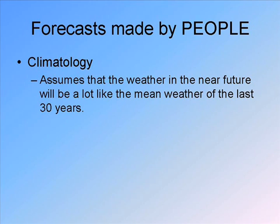One way to make a forecast of what the weather is going to be like on April 17th is to just look back and see what the mean temperatures were on April 17th over the last 30 years. This is not a terrible way to make a forecast because odds are it's only going to be so different from the mean temperature over the last 30 years.